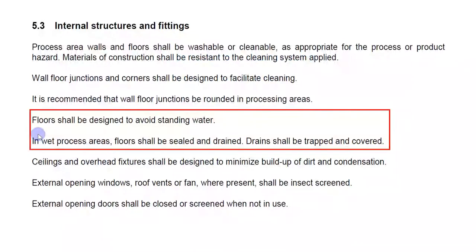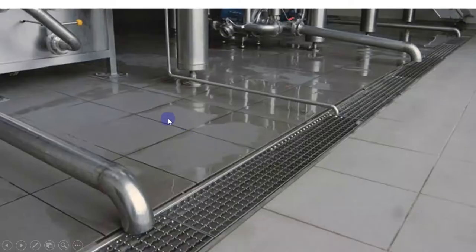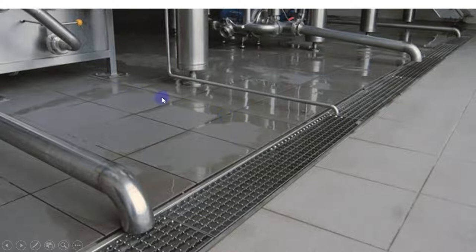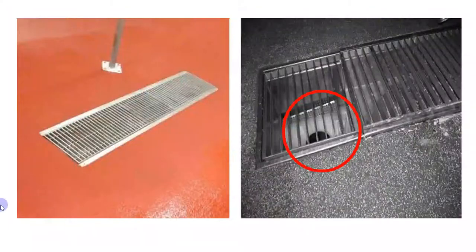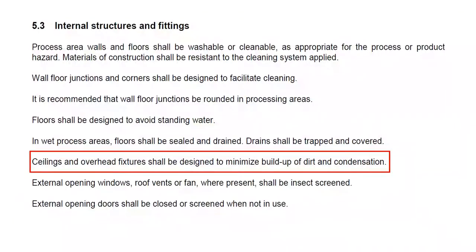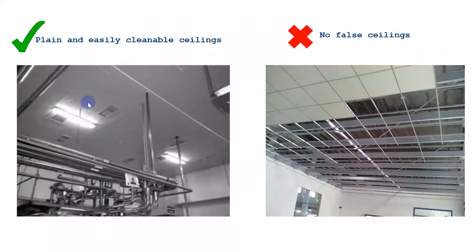Floors shall be designed to avoid standing water and should be sealed, drained, and covered. In the milk or beverage industry it is mostly wet processing, so water flow should be towards the drains, and drains should be covered and trapped. Ceilings and overhead fixtures shall be designed to minimize buildup of dirt and condensation — use plain, easily cleanable ceilings and avoid false ceilings and criss-cross structures in the processing area.